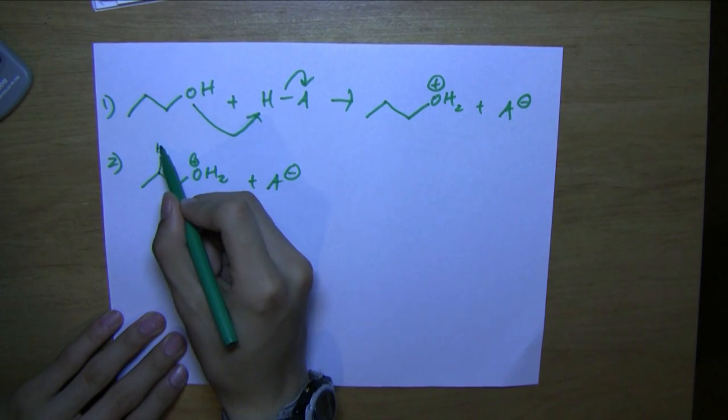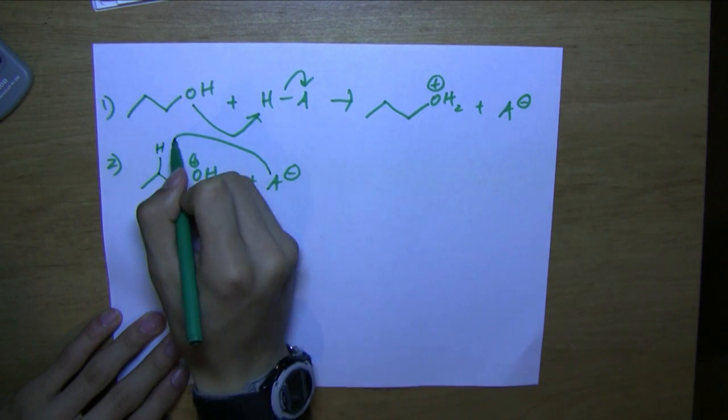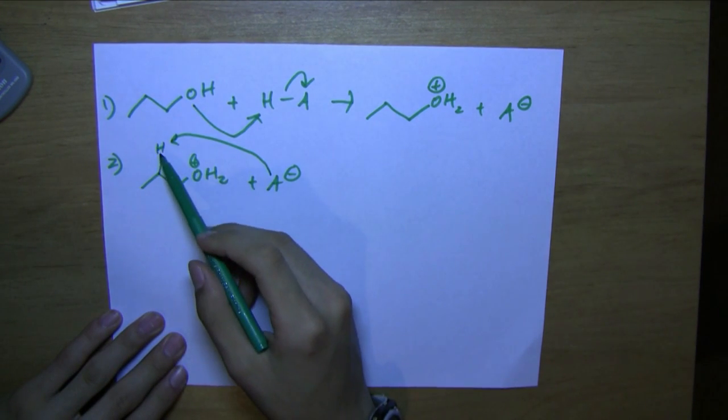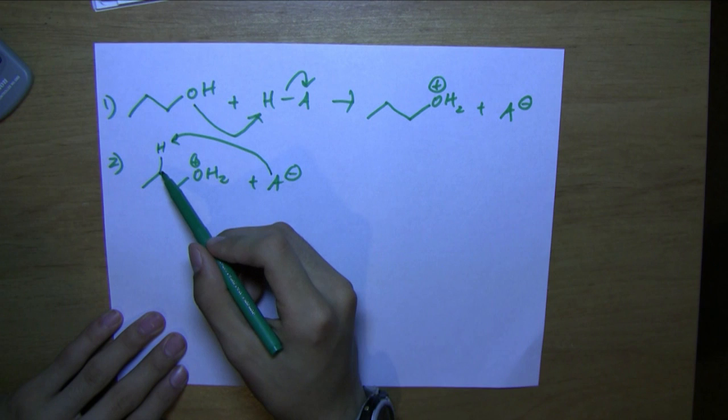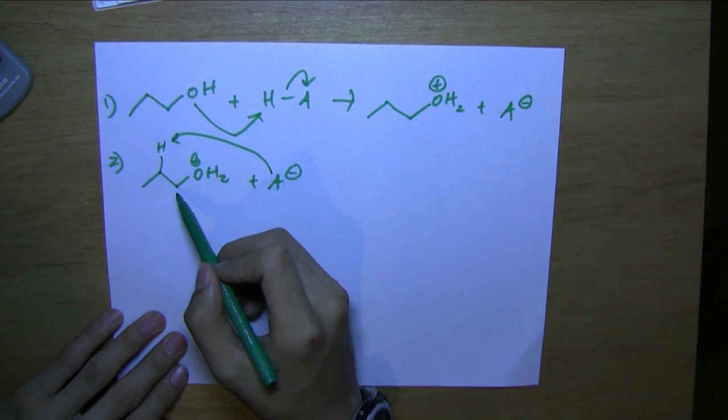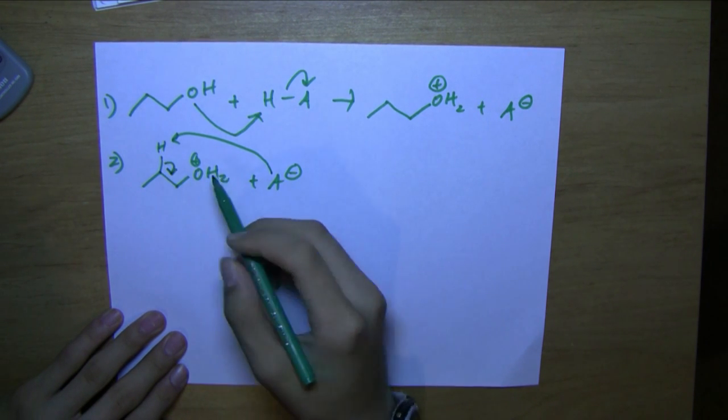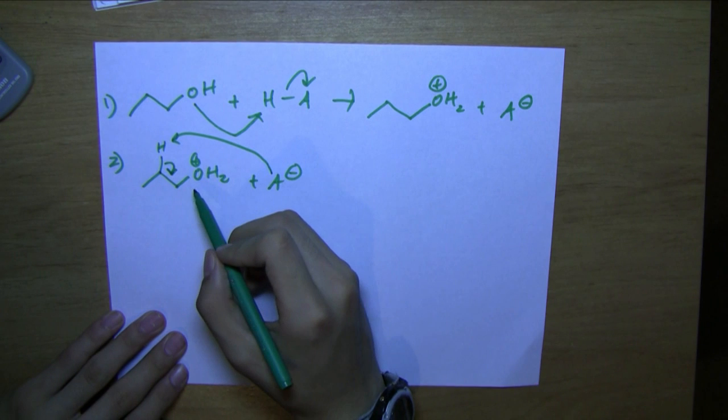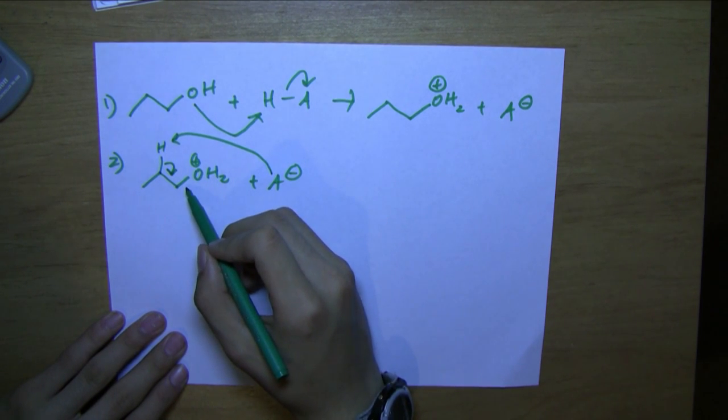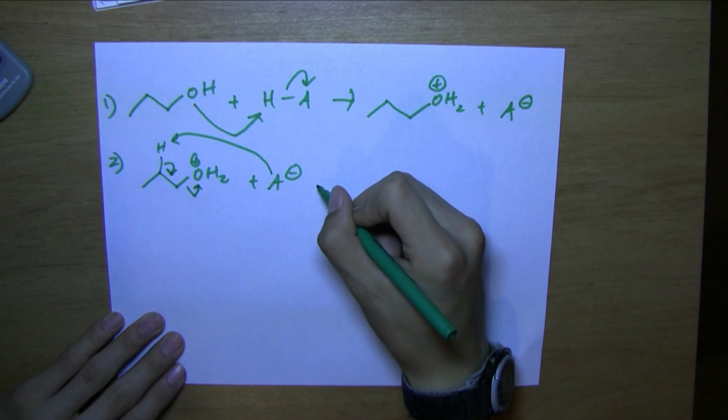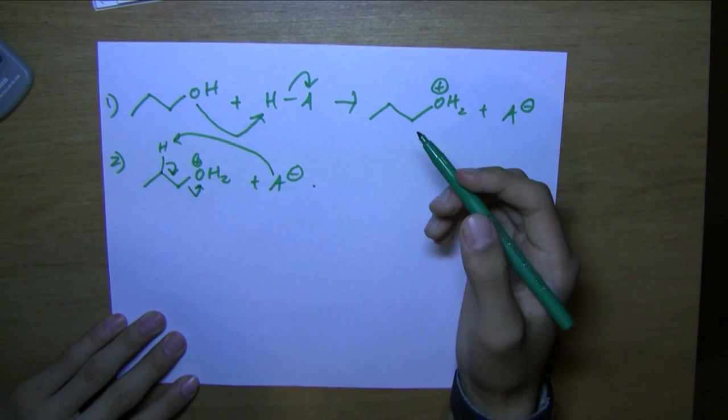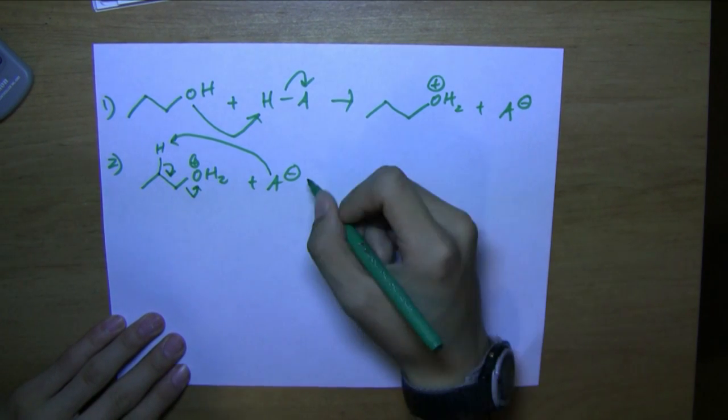This carbon-hydrogen bond donates electrons to the beta carbon and alpha carbon bond. And then this alpha carbon and oxygen bond electrons go to the oxygen. So it's basically just steps two and three of the E1 mechanism combined.